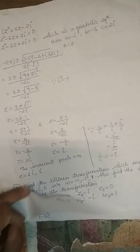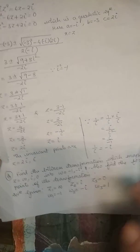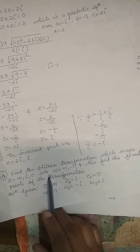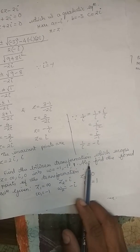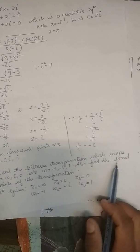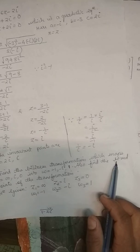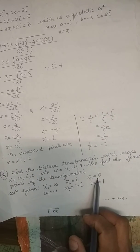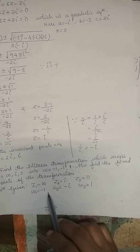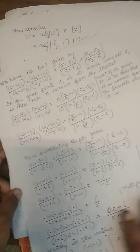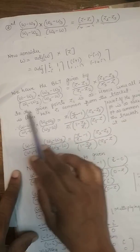Problem 2: Find the bilinear transformation which maps Z equals infinity, i, 0 into W equals minus 1, minus i, 1. Also find the fixed points of the bilinear transformation. Here Z1=infinity, Z2=i, Z3=0, W1=minus 1, W2=minus i, W3=1.